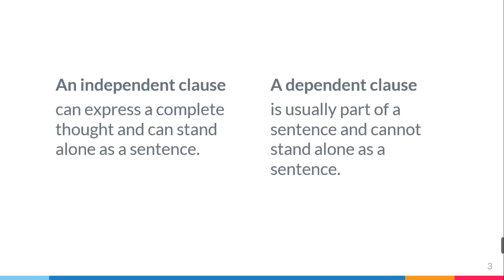A dependent clause is usually part of a sentence and cannot stand alone as a sentence — it is part of a bigger sentence. In a sentence that might have more than one clause, one of them will be the independent one, meaning it can stand alone. But the dependent clause should be attached to the independent one and cannot stand alone as a sentence.